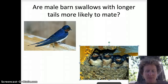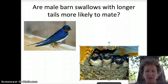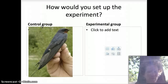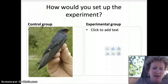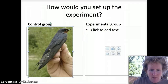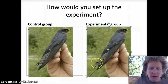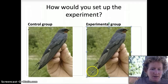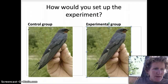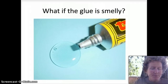To manipulate variables in this experiment, they wanted to change the length of the tails. They made a control group where they didn't change anything, and then in the experimental group they took a barn swallow, chopped off the tail, and put in longer tail feathers. So they made an experimental group that had longer tail feathers. The independent variable was the length.